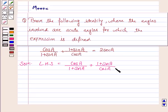Now we'll simplify LHS and prove that it is equal to RHS. So we take the LCM. We have cos square A plus 1 plus sin A whole square in the numerator and in the denominator we have 1 plus sin A into cos A.